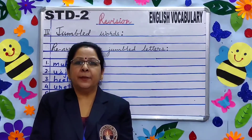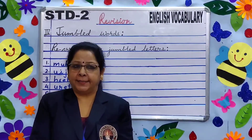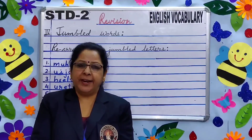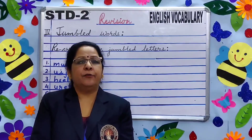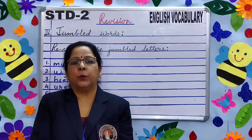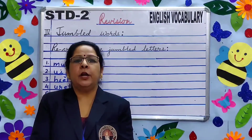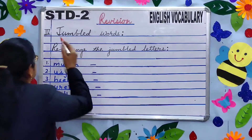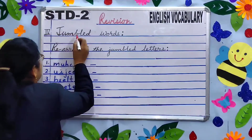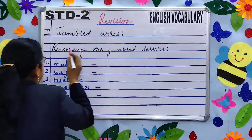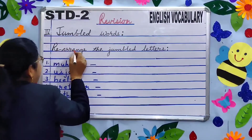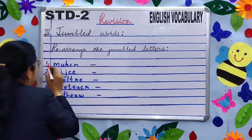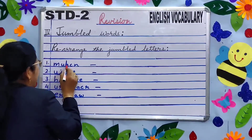The fourth topic is jumbled words. In this topic you have to rearrange the jumbled letters and write the correct word. Children, look at the board. Number four — jumbled words: rearrange the jumbled letters. Number one: M-U-H-C-N — what is the correct word?